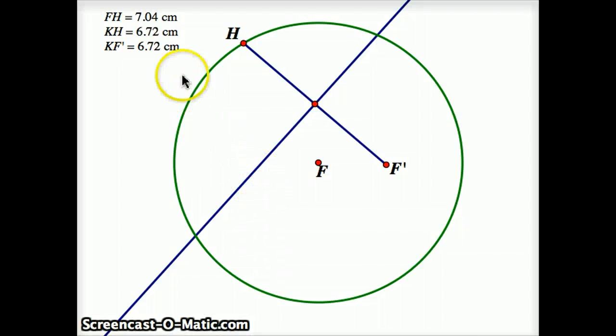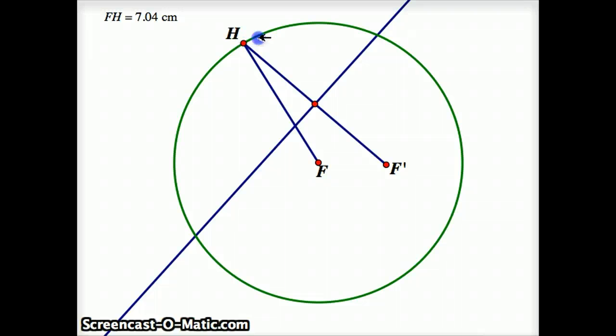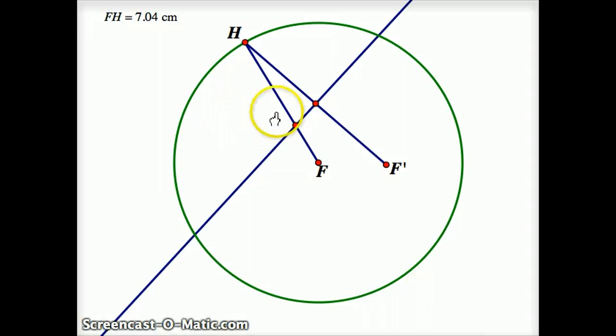Now, keeping that in mind, I'm going to make a line segment now that connects F to H, which is a radius of the circle. And finally, I'm going to make a point right here, the intersection of that radius with the perpendicular bisector, and I'm going to call that point P.